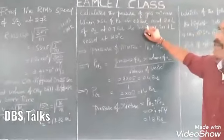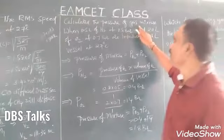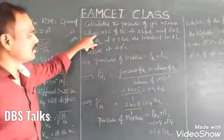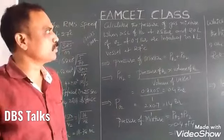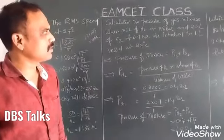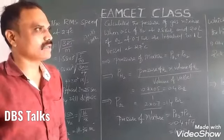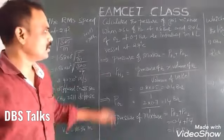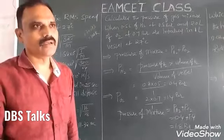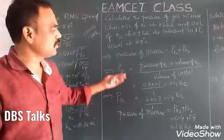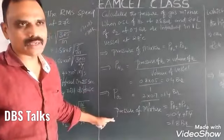Now I'm talking about calculating the pressure of a gas in a mixture. 0.5 litres of hydrogen at 0.8 bar and 2 litres of oxygen at 0.7 bar are introduced into a one-litre vessel at 27 degrees centigrade. You need to calculate what is the total pressure of the gas. First of all, you can calculate the pressure of hydrogen and pressure of oxygen, then add them to get the total pressure.